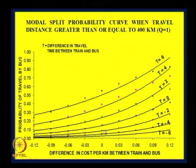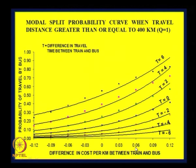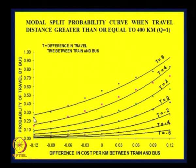We also discussed the usefulness of this kind of plot. I gave an example of railways desiring to increase the fare such that the cost difference becomes 0.06 from the earlier value of 0.03. When the time difference is 0, the share by bus will be around 20 percent, and when the railway increases the cost so that CT minus CB becomes 0.06, there is an increase in the bus share of about 5 percent. So railways will be losing some traffic to bus service.